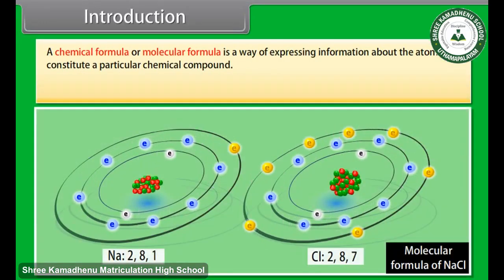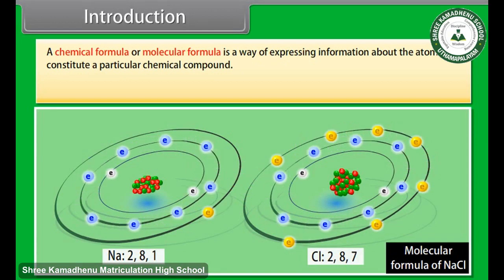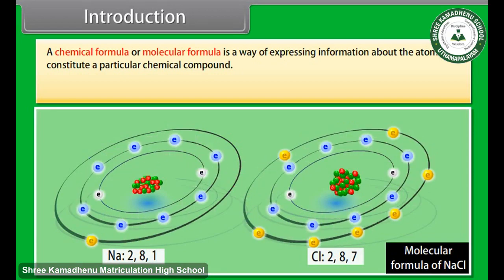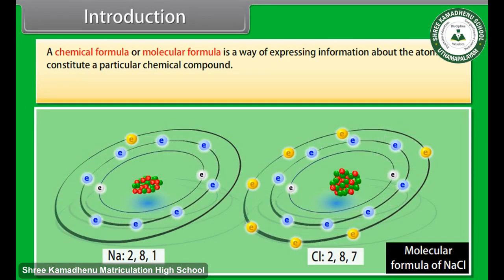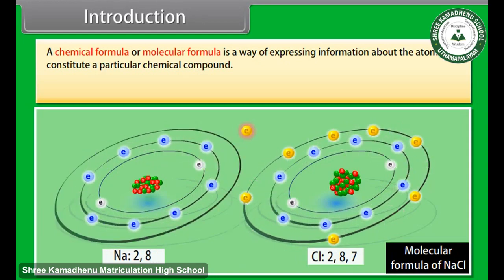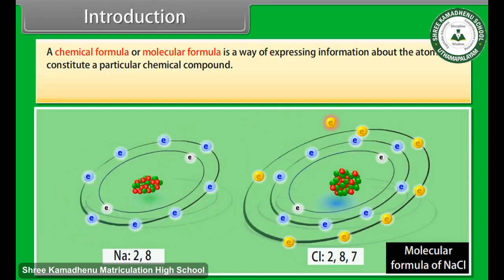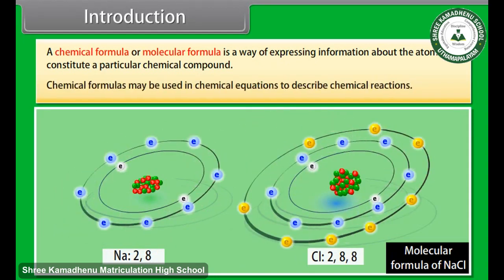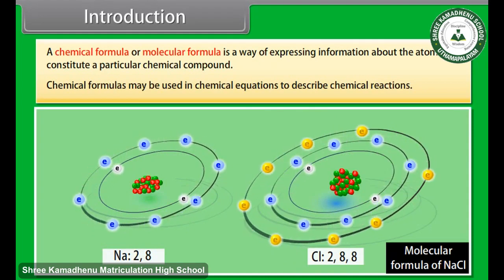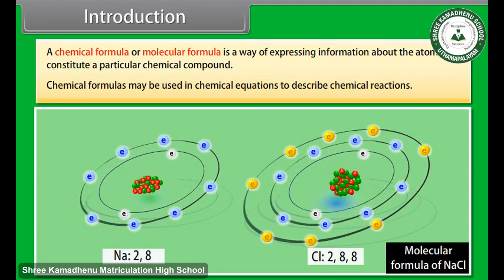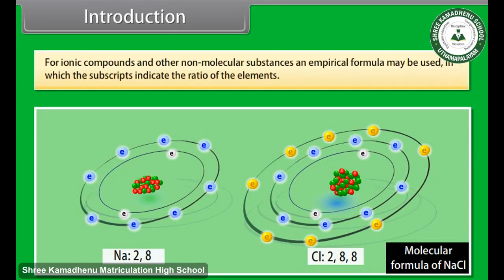A chemical formula or molecular formula is a way of expressing information about the atoms that constitute a particular chemical compound. Chemical formulas may be used in chemical equations to describe chemical reactions. For ionic compounds and other non-molecular substances, an empirical formula may be used in which the subscripts indicate the ratio of the elements.